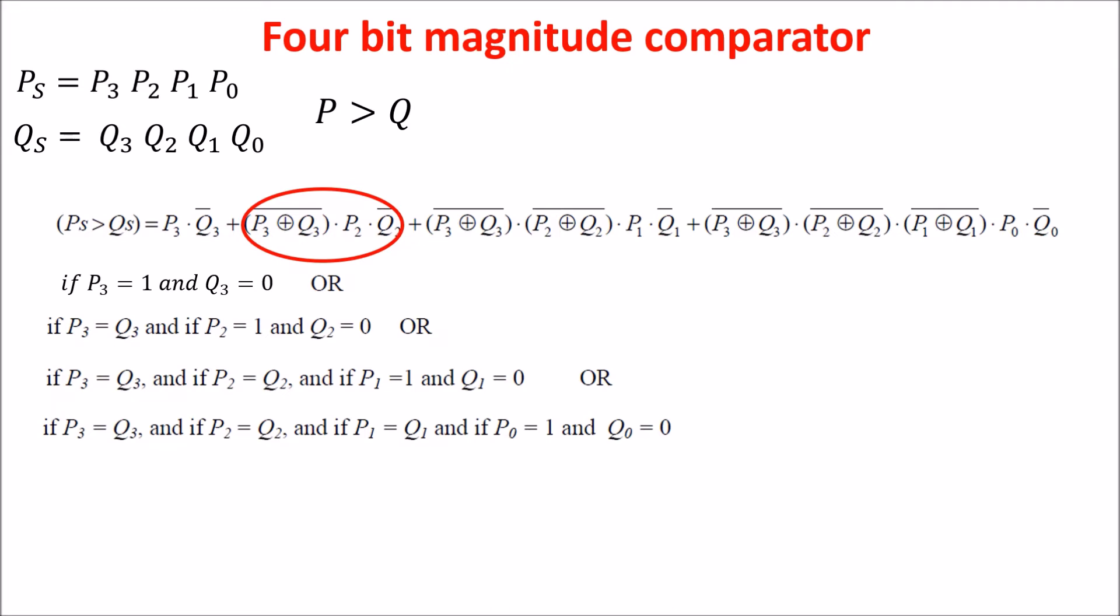In the second term, we see the XNOR of P3 and Q3 because we want P3 equals Q3 and P2 1 and Q2 0 and so on.